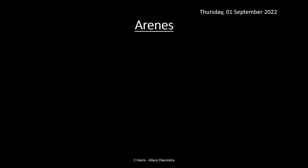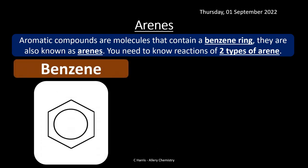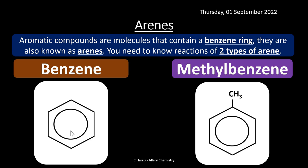We're going to look at arenes. We've seen a little bit of arenes in the introduction to A-level organic chemistry in the previous topic, so now we're going to go into more detail on each different subtopic. Arenes are basically aromatic compounds — these contain a benzene ring. You need to know reactions of two types of arene: benzene, which is a hexagon of six carbons with a delocalized ring of electrons, and methylbenzene, which is basically benzene with a methyl group attached.